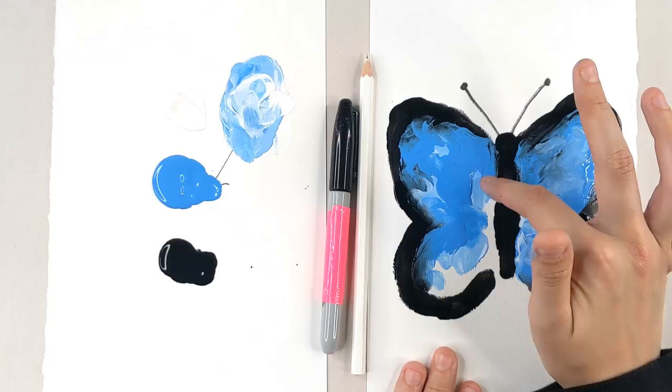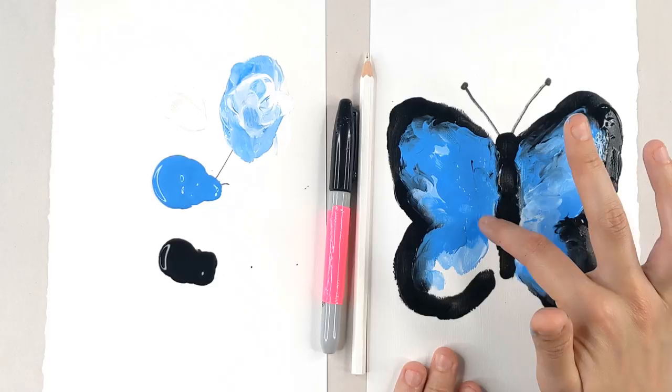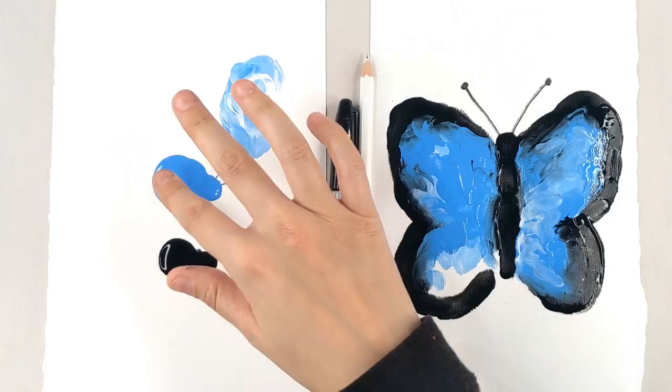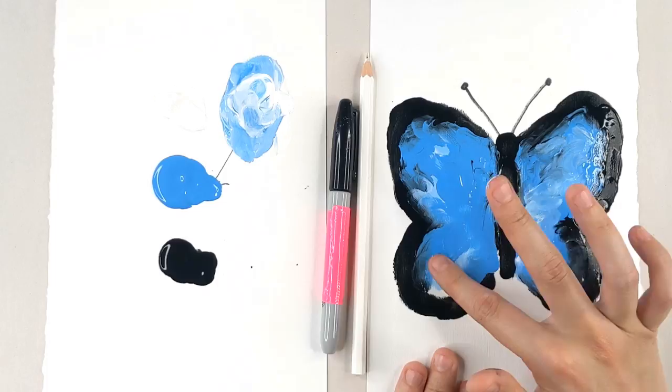Blue morphos actually have a really funny body in that their wings are bright bright blue on one side but then when they fold them up it looks like the forest floor.